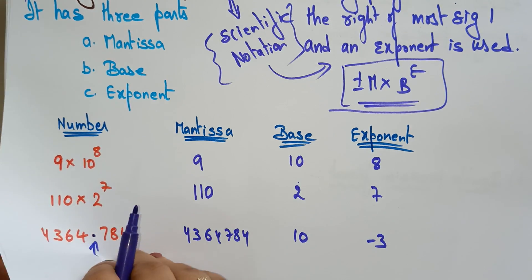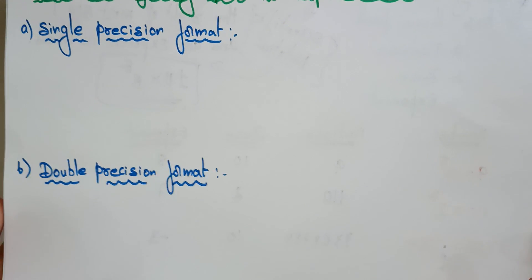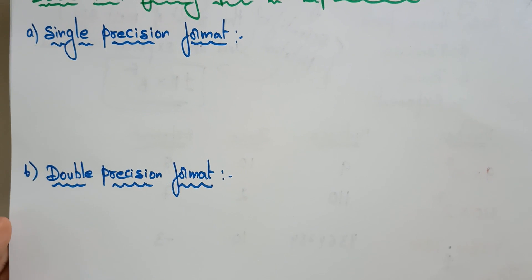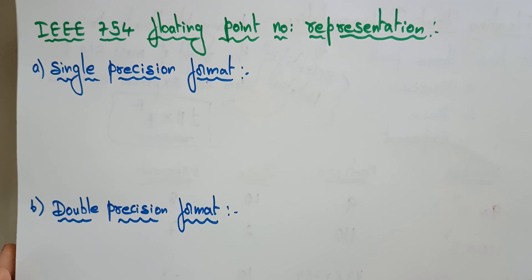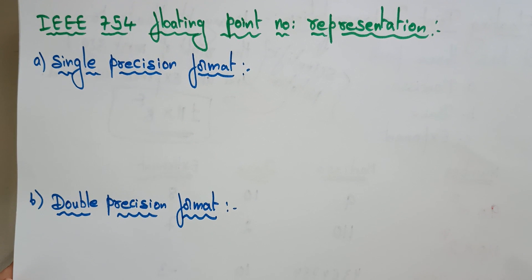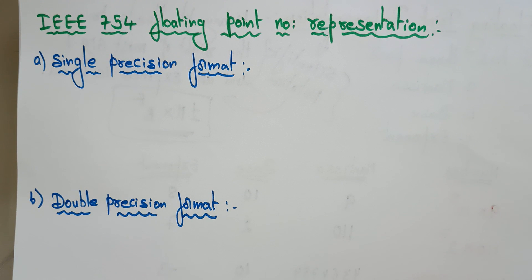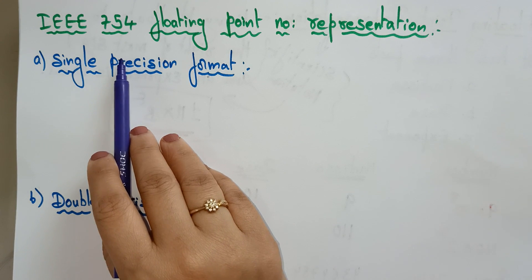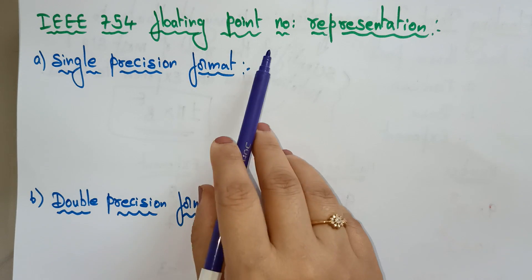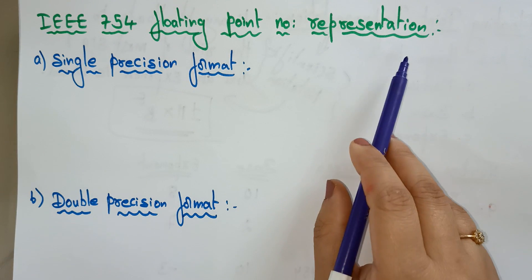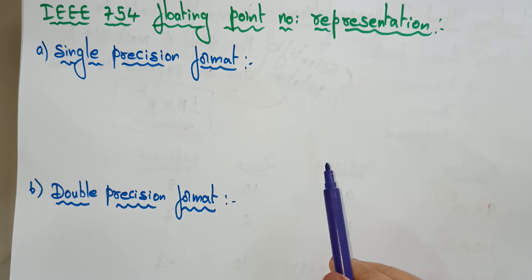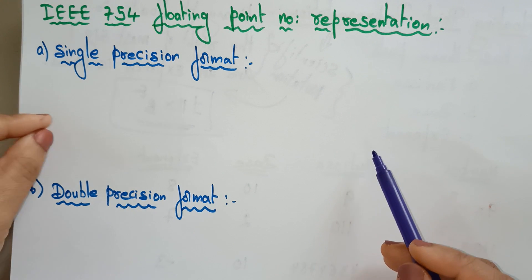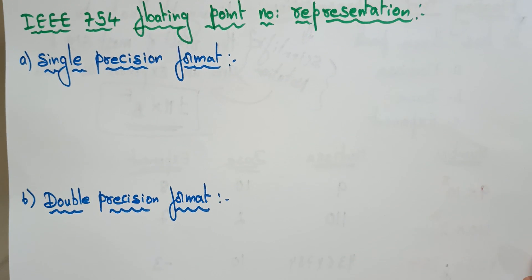Now let me tell you about the IEEE 754 floating point number representation. The standard we follow in floating point scientific notation is the IEEE 754 standard. These IEEE 754 floating point numbers can be represented using single precision format as well as double precision format.